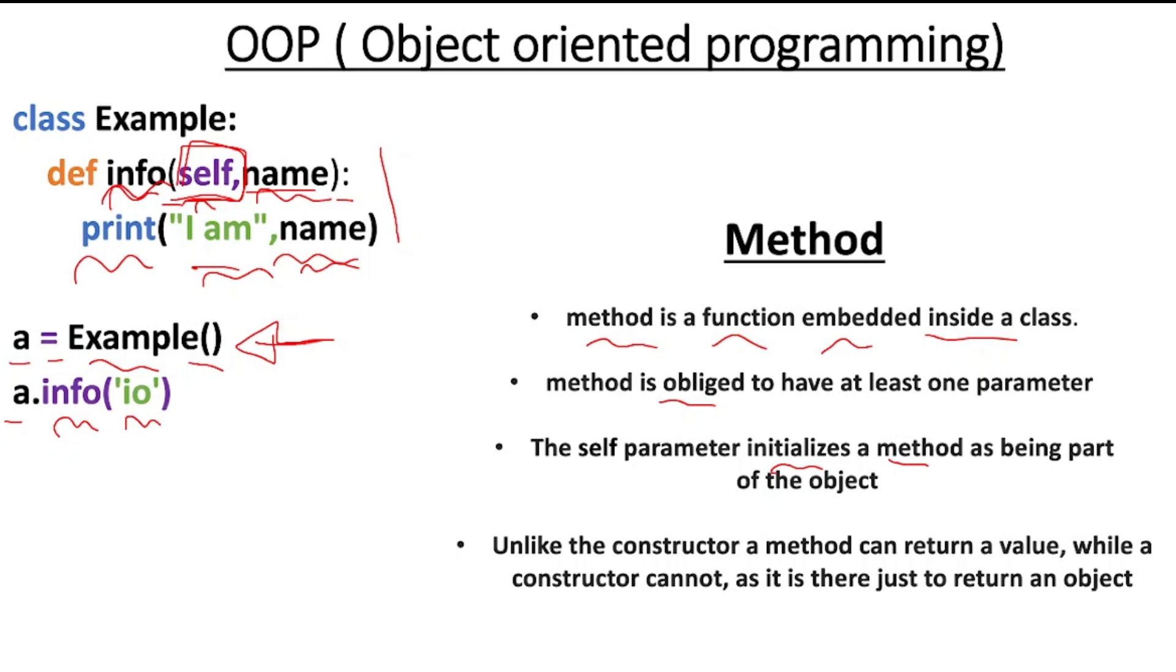Then unlike the constructor, a method can return a value while the constructor cannot, as it is there just to return an object.